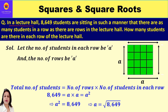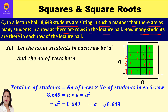The first question is: in a lecture hall, 8649 students are sitting in such a manner that there are as many students in a row as there are rows in the lecture hall. How many students are there in each row? Suppose there are 4 rows — 1, 2, 3, and 4 — and the number of students in each row is also 4, so 4+4+4+4 = 16, which is 4 into 4, a square form.